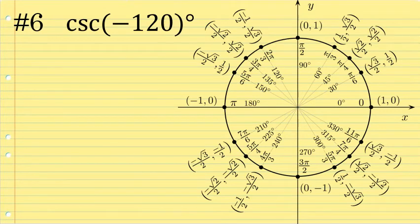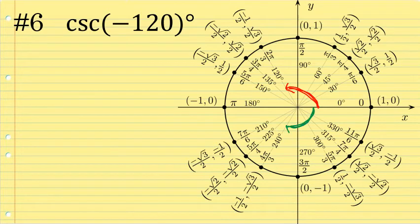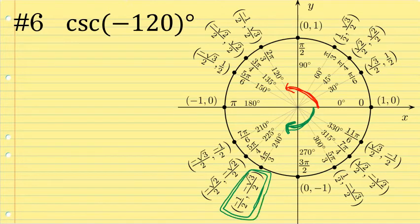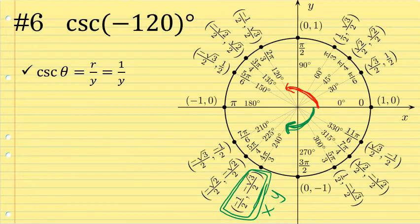For our final example, let's find the cosecant of negative 120 degrees. Positive 120 degrees is indicated in red; negative 120 degrees is the same distance but down and clockwise around the unit circle, shown in green. It takes us to the associated ordered pair with x-coordinate of negative one half and y-coordinate of negative √3/2. The cosecant ratio is r over y, so this will be one over negative √3/2.